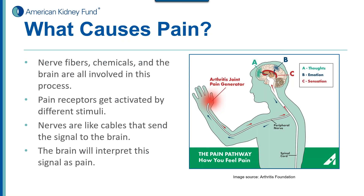So what causes pain? If you look at the illustration on the right side, you can see — let's say someone has pain in their joint because of arthritis. That triggers nerve fibers to be activated, and chemicals at that site get released by different stimuli. Cables or nerves send those signals from the source to the brain, and the brain interprets this as pain. There are a lot of things that can influence the actual pain signal inside the brain, including your thoughts, emotions, and other factors.